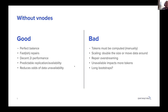It reduces the odds of data unavailability, so you can lose more nodes as you have less nodes sharing tokens. The bad is that you have to compute the tokens or you need some automation to compute it for you.